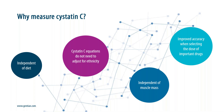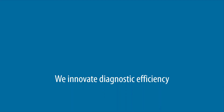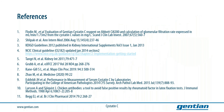To conclude this webinar, I would like to sum up the reasons to use the Gentian cystatin C assay. Cystatin C is independent of the patient's muscle mass. There is no need to adjust for ethnicity. When an accurate estimated GFR is needed for drug dosing, measuring cystatin C can be especially beneficial. Thank you for your attention. Here is the reference list used to prepare this webinar. If you want to know more about Gentian cystatin C or our other products, feel free to contact us at marketing@gentian.com, or take a look at our other webinars. Thank you.